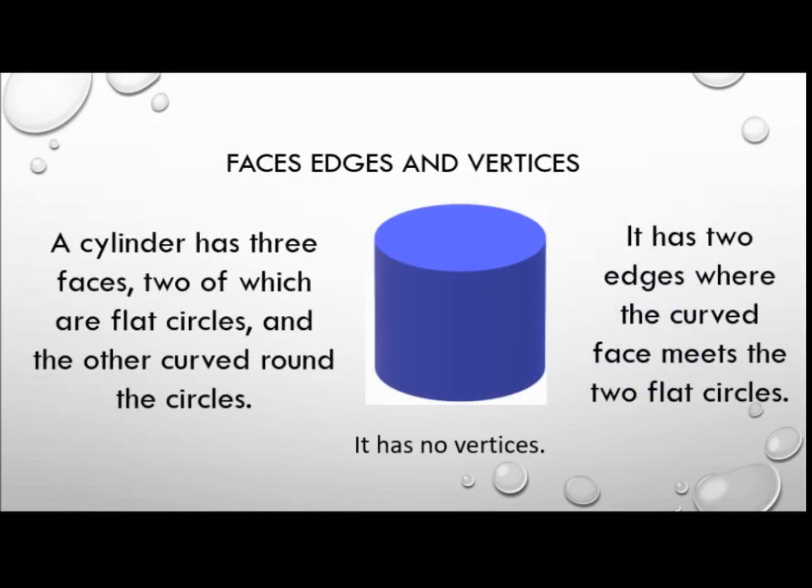A cylinder has three faces, two of which are flat circles and the other curved around the circles. It has two edges where the curved face meets the two flat circles and it has no vertices.